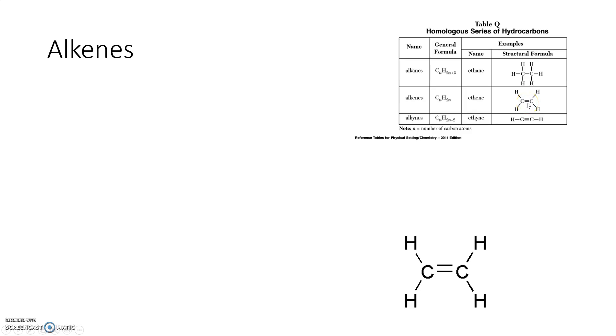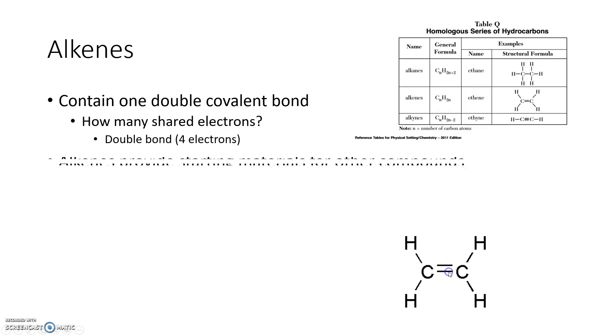That is for alkanes. Since we have a double bond in our structural formula, we know that we have an alkene right here. So the alkene has to have at least one double bond. In a double bond there are two lines which is how many electrons. If you think about that, there's two in this first line, two in the second line, so there's a total of four electrons being shared.